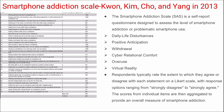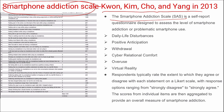Next is the Smartphone Addiction Scale (SA scale) by Kwon, Kim, Cho, and Yang — a self-reported questionnaire assessing the level of smartphone addiction or problematic smartphone usage. The domains include daily life disturbances, positive anticipation, withdrawal, cyber relational comfort, overuse, and virtual reality. Respondents rate on a Likert scale from strongly disagree to strongly agree, and scores are aggregated to provide an overall measure of smartphone addiction.